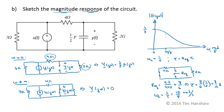The cutoff frequency is 12 over 8 radians per second, and the magnitude at the cutoff frequency is 1 over 3 root 2, because by definition the magnitude at the corner frequency is 1 over root 2 times the maximum value, which is 1 third.